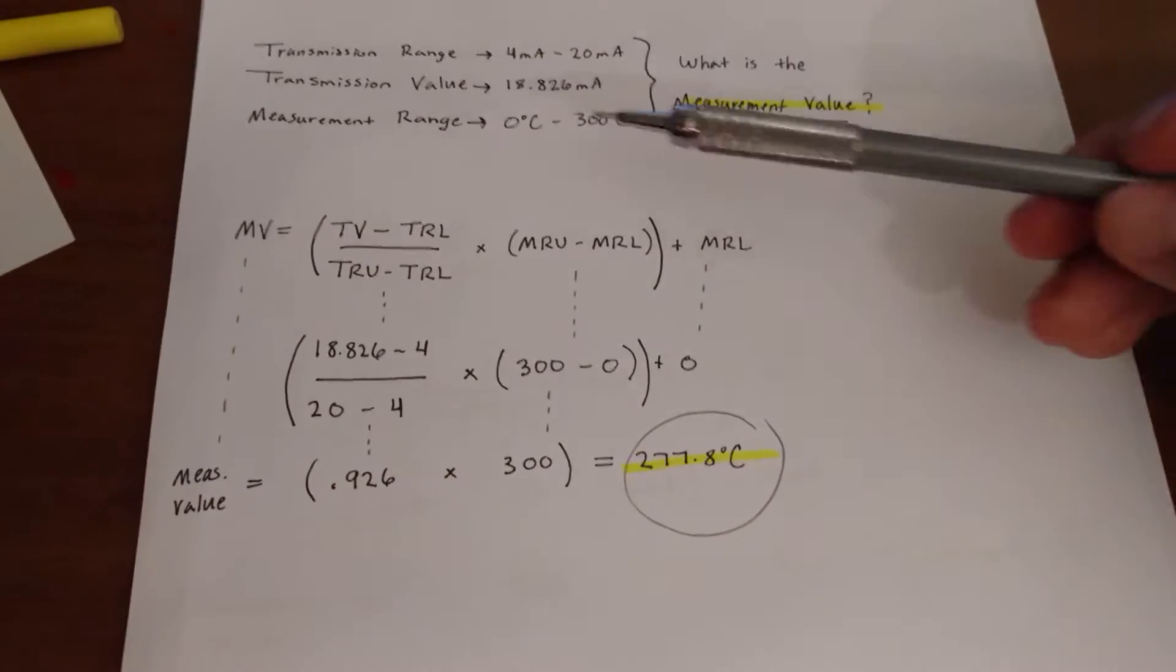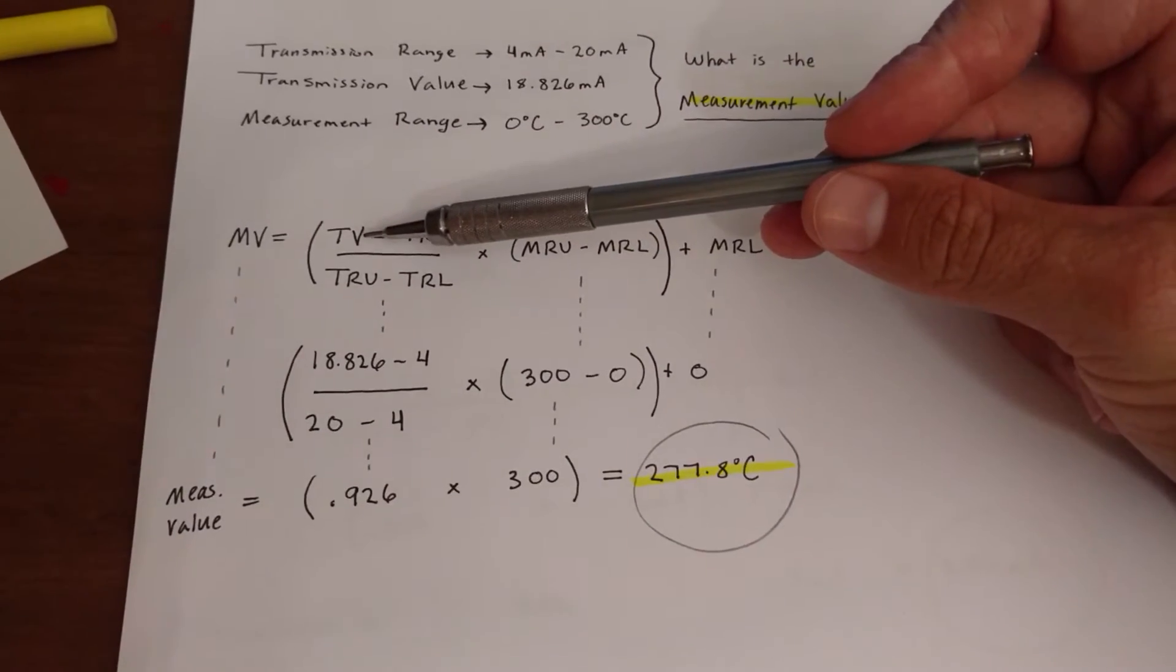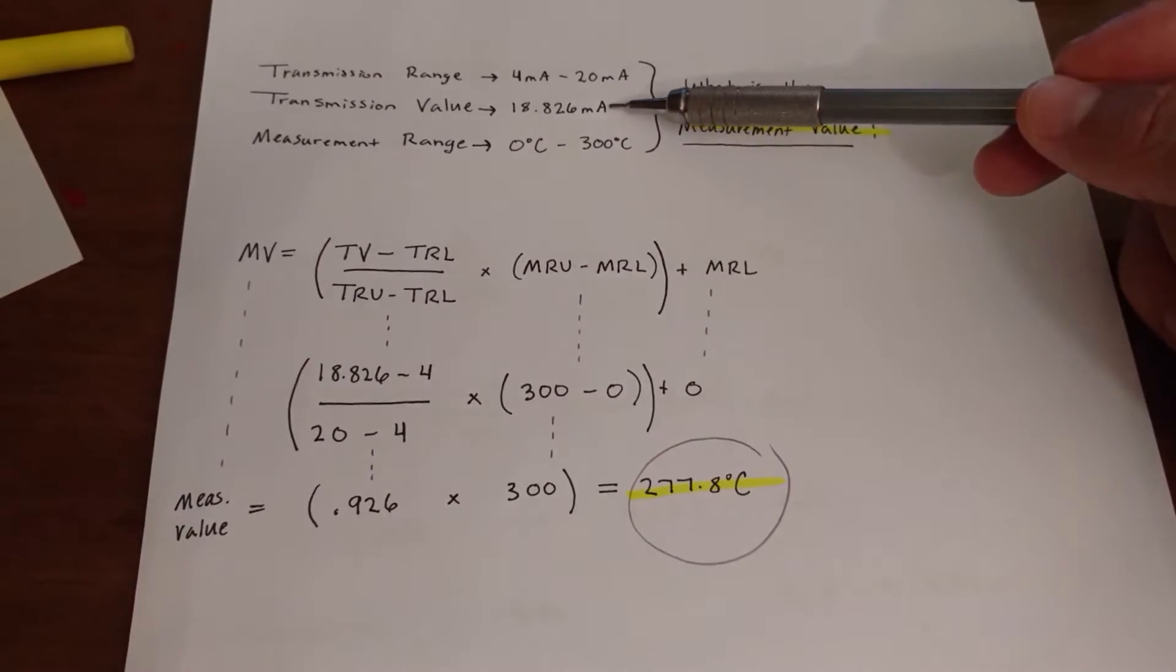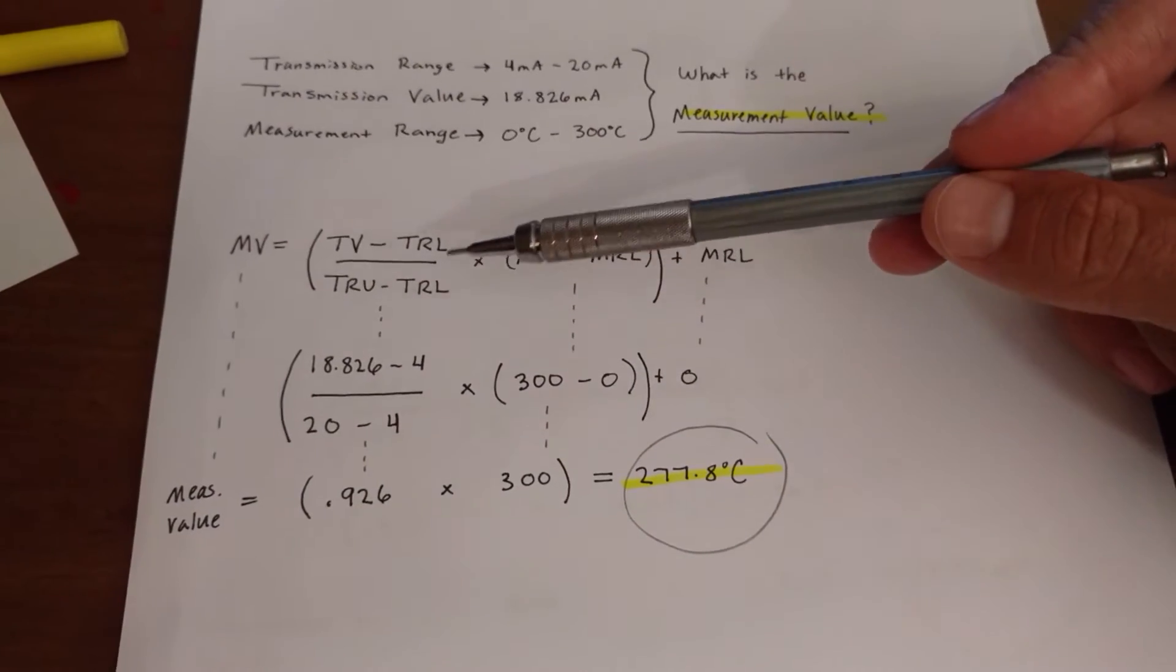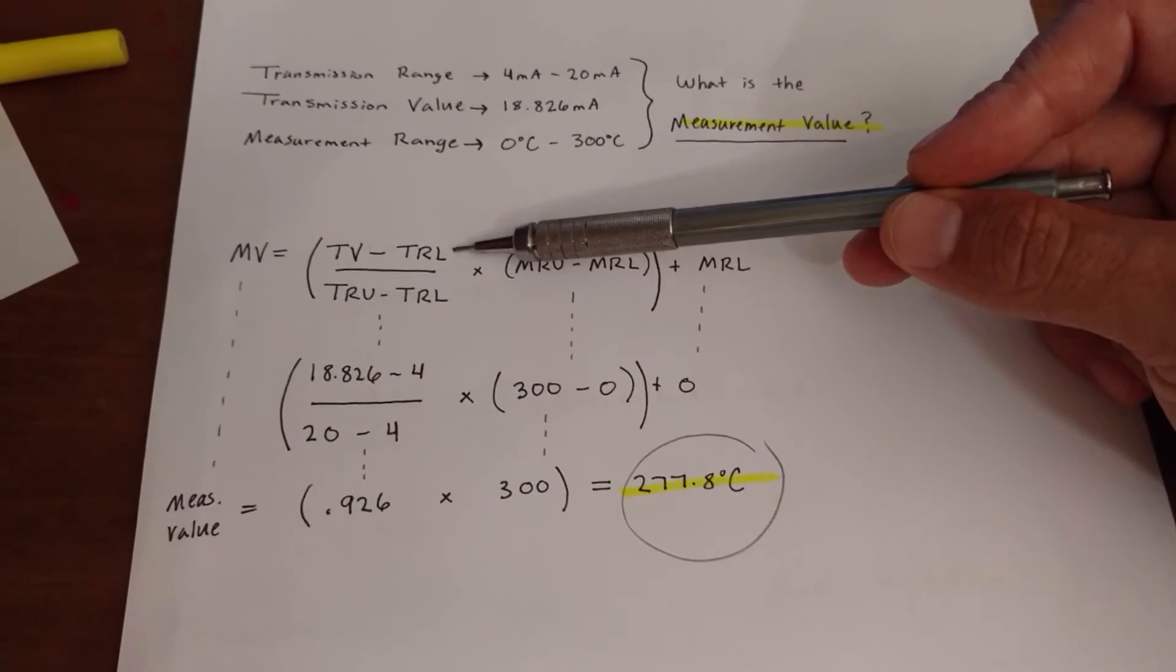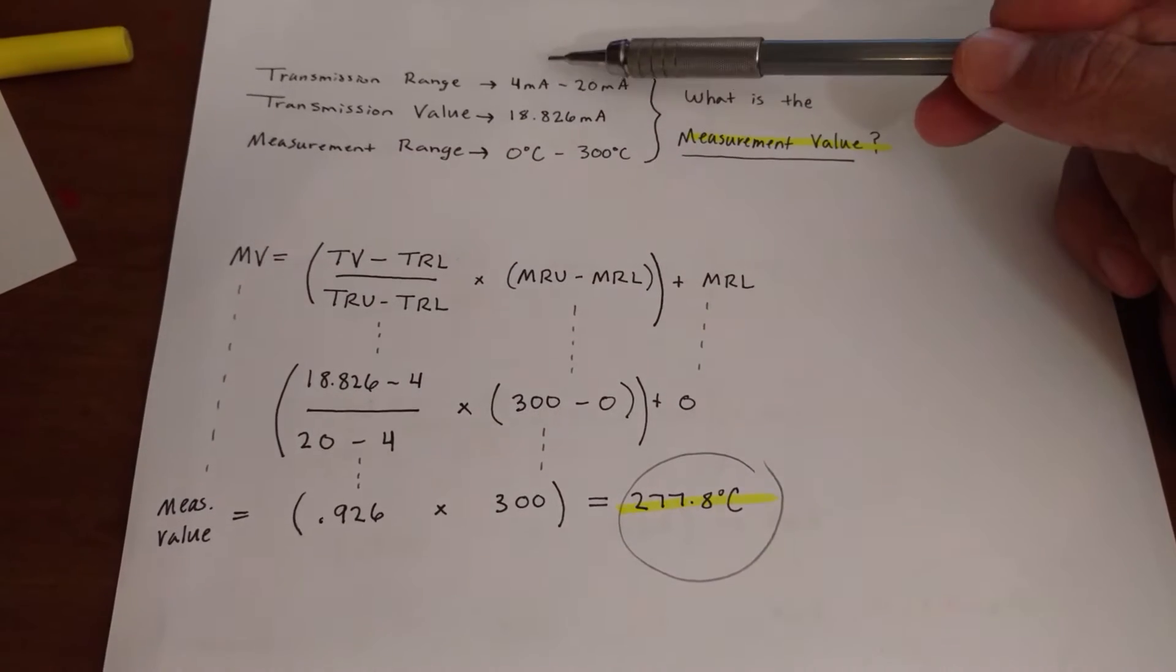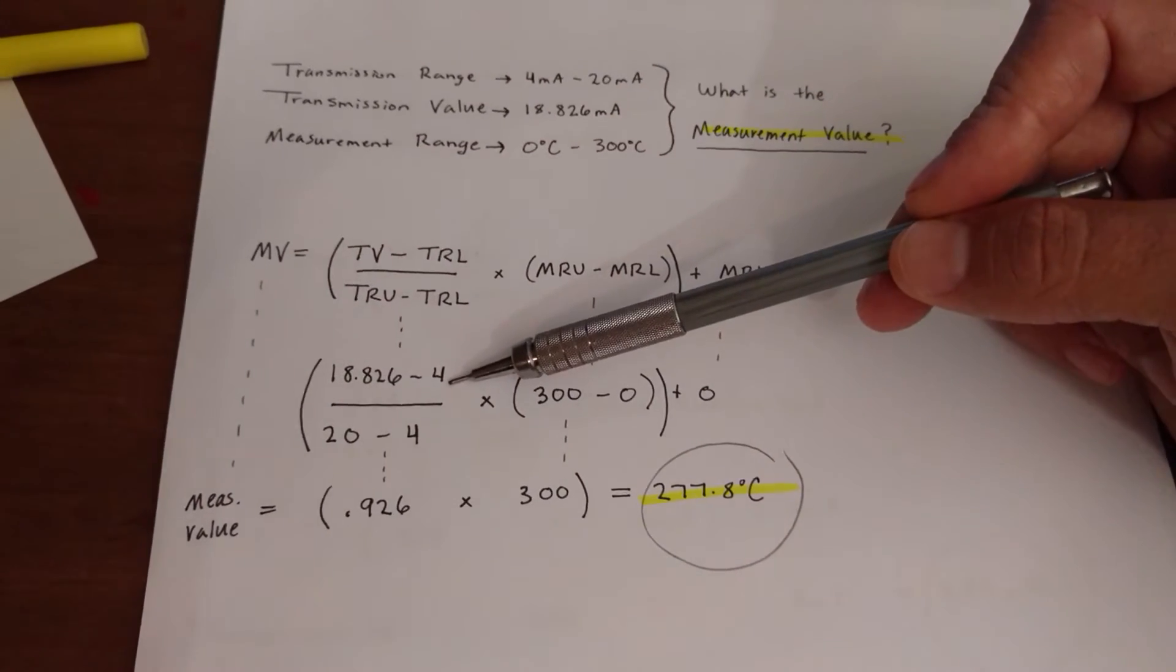So you've got to know what these letters mean. TV right here, that's your transmission value, 18.826. Just plug it in. You're going to have your transmission range lower value. Transmission range lower value in this case is 4 milliamps, so we're just going to use the 4.